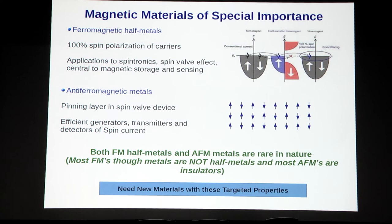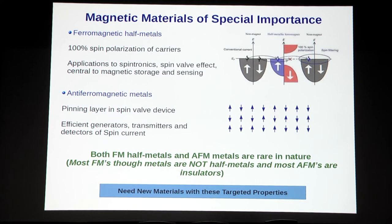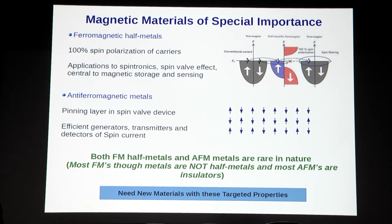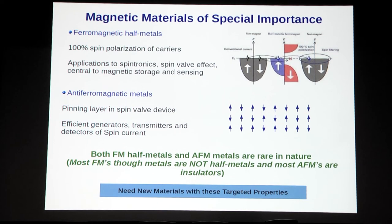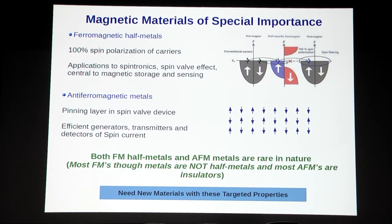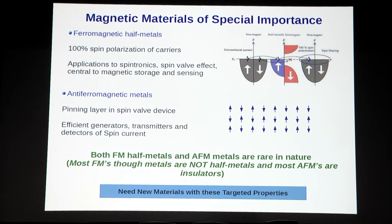Among magnets, ferromagnetic half metals deserve special attention. We all know ferromagnets — iron is a ferromagnet. But half metals are materials for which only electrons with a specific spin polarization can conduct, while the opposite spin polarization is insulating. Iron is a ferromagnet but not a half metal — both up-spin and down-spin electrons conduct, though up-spin conducts more. We want a material where only up-spin conducts and down-spin does not.